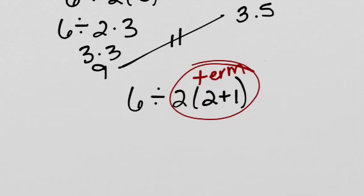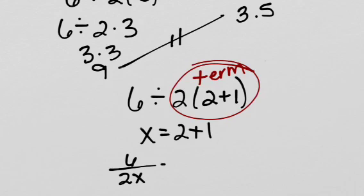But let's suppose then, let's assume that x equals 2 plus 1. If x equals 2 plus 1, we could rewrite this as 6 over 2x. If we were to do that, that implies that the multiplication has to happen first because the 2x is a term in and of itself.